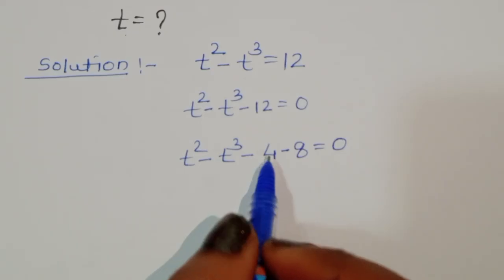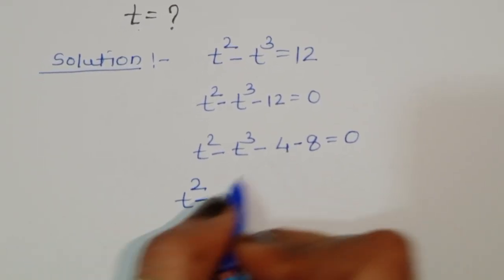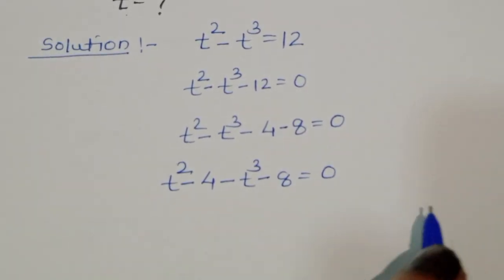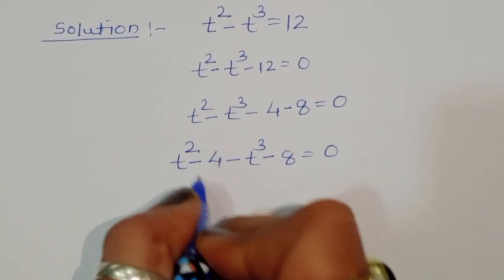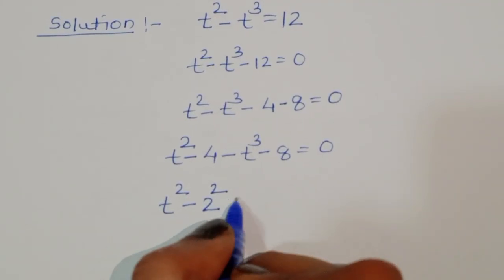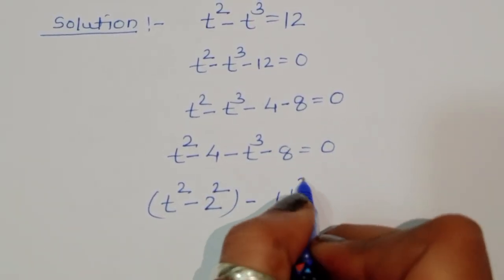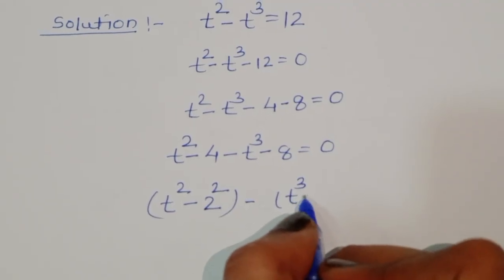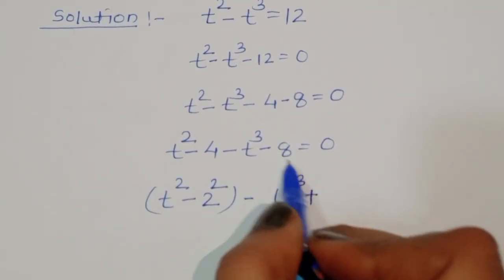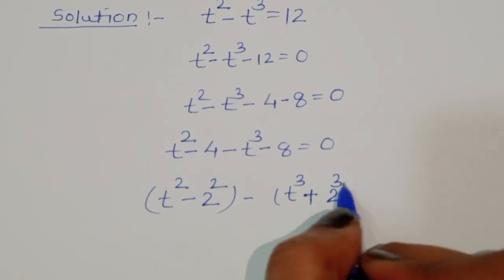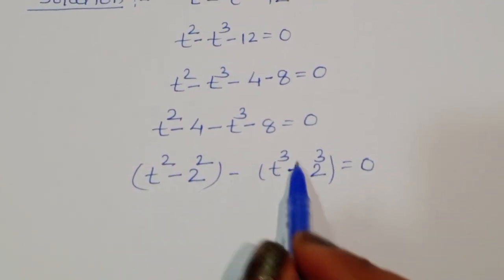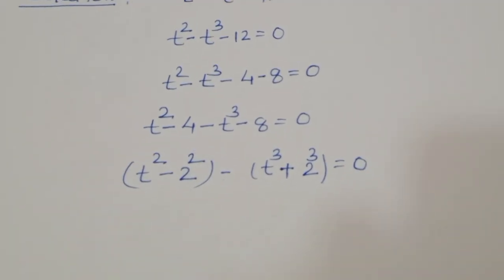We can group this as: t squared minus 4, minus t cubed minus 8, is equal to 0. Here, 4 can be written as 2 squared and 8 can be written as 2 cubed. So we get t squared minus 2 squared minus t cubed plus 2 cubed is equal to 0.